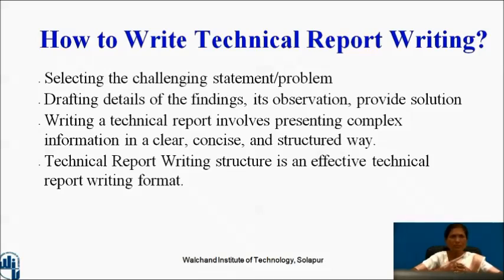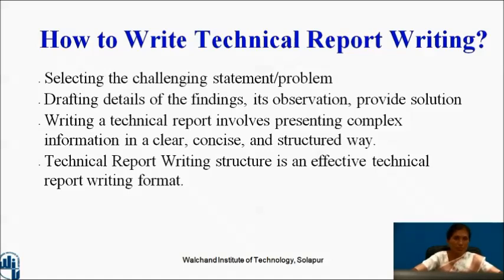Changing the statement as we have discussed: drafting details of the finding, observation, provide solution, and write concretely and neatly — meaning write concisely and precisely, in a clear language. Terminologies can be used appropriately. Accurate terminologies can be used. You can also use AI tools, techniques, and devices for making your reports authentic and accurate. Writing a technical report involves presenting complex information in a clear, concise, and structured way. Technical report writing structure is an effective technical report writing format, and that will serve as part of web sources for further generations.